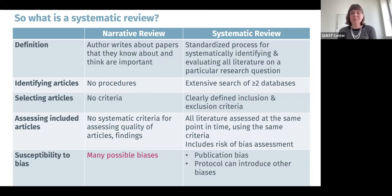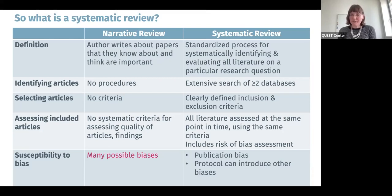When we do a systematic review, we go through an extensive search procedure where we use at least two search engines, and we have very clearly defined inclusion and exclusion criteria for what types of articles we want to include and why. In terms of assessing included articles, with the narrative review there are no specific criteria — it's simply up to the researcher to make decisions. Those studies aren't assessed for the quality of their methodology or scientific rigor before they are included. With a systematic review, we want to evaluate the quality of all the literature that's included, using a clearly specified procedure as well as possibly established instruments.